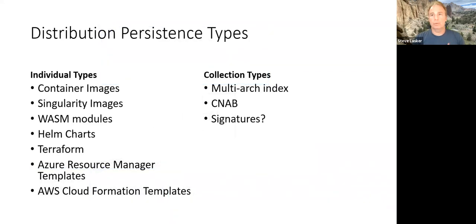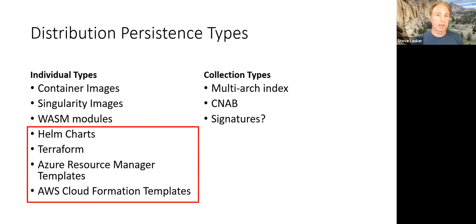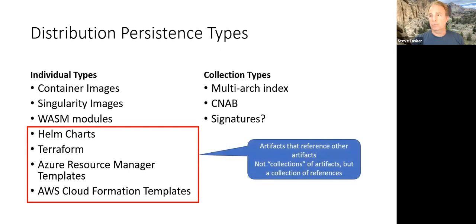As we've been thinking about signatures, we've been thinking about how they fit in. Initially we were trying to minimize changes and glommed onto the config object that exists in the manifest — that worked well. As we start thinking about signatures or collections, some interesting questions arise. Are these really collection types? Are these things even really singular types?